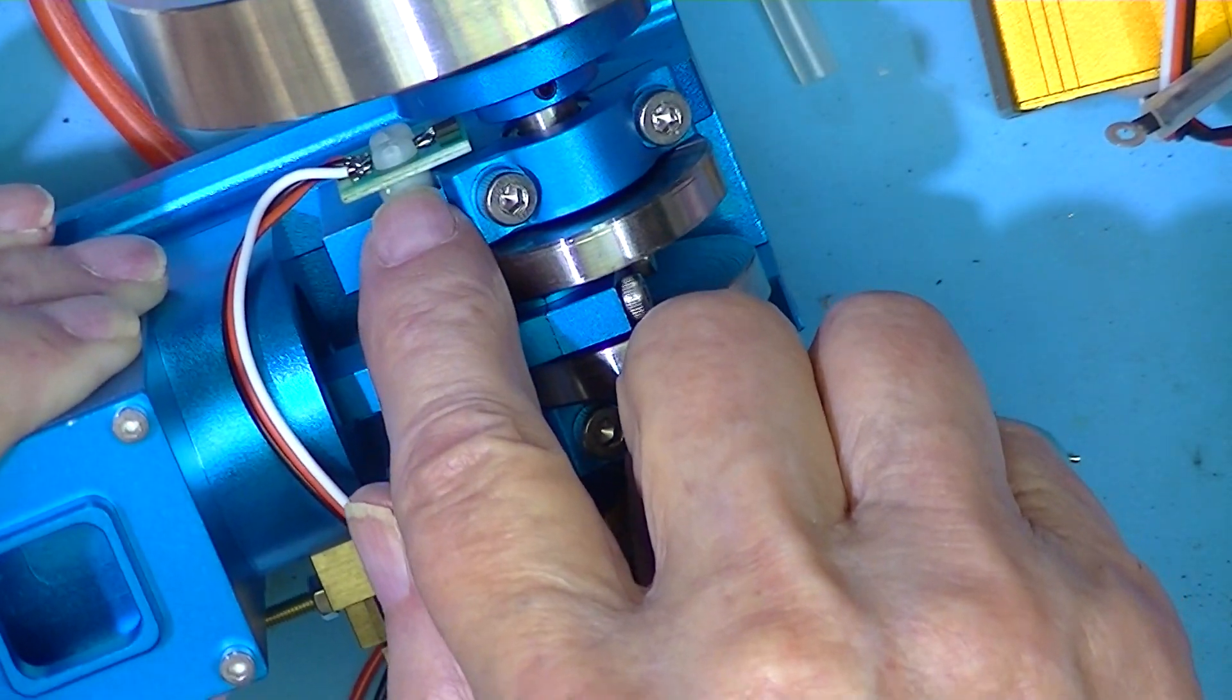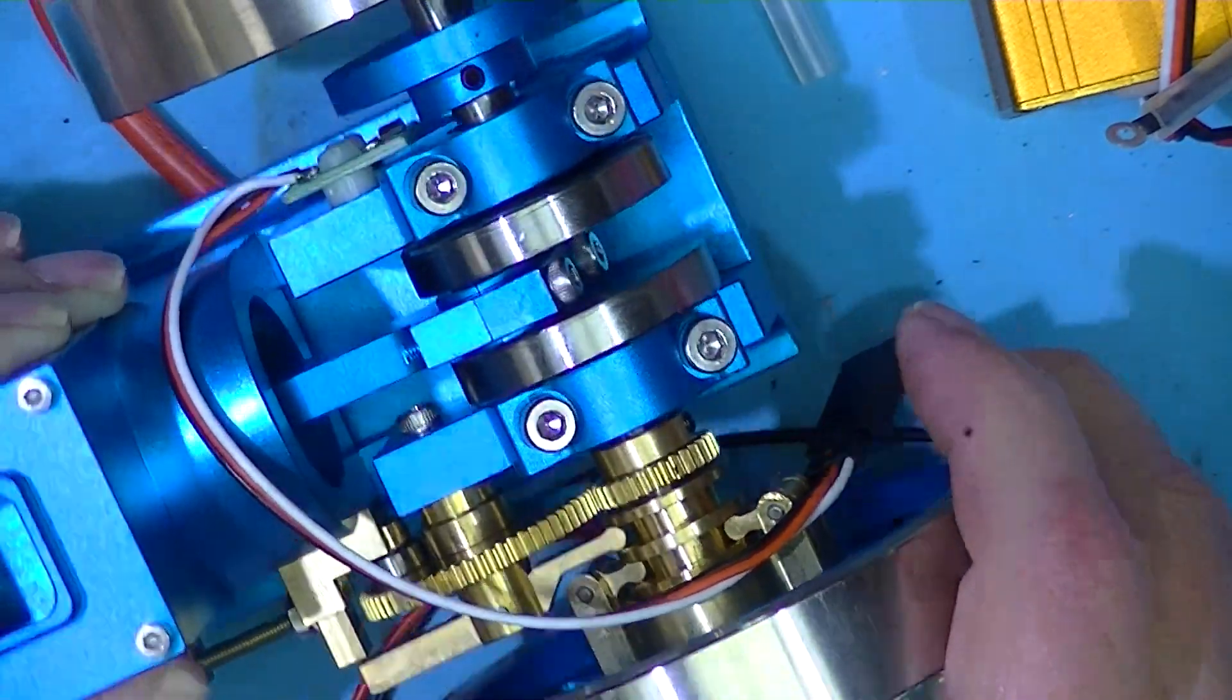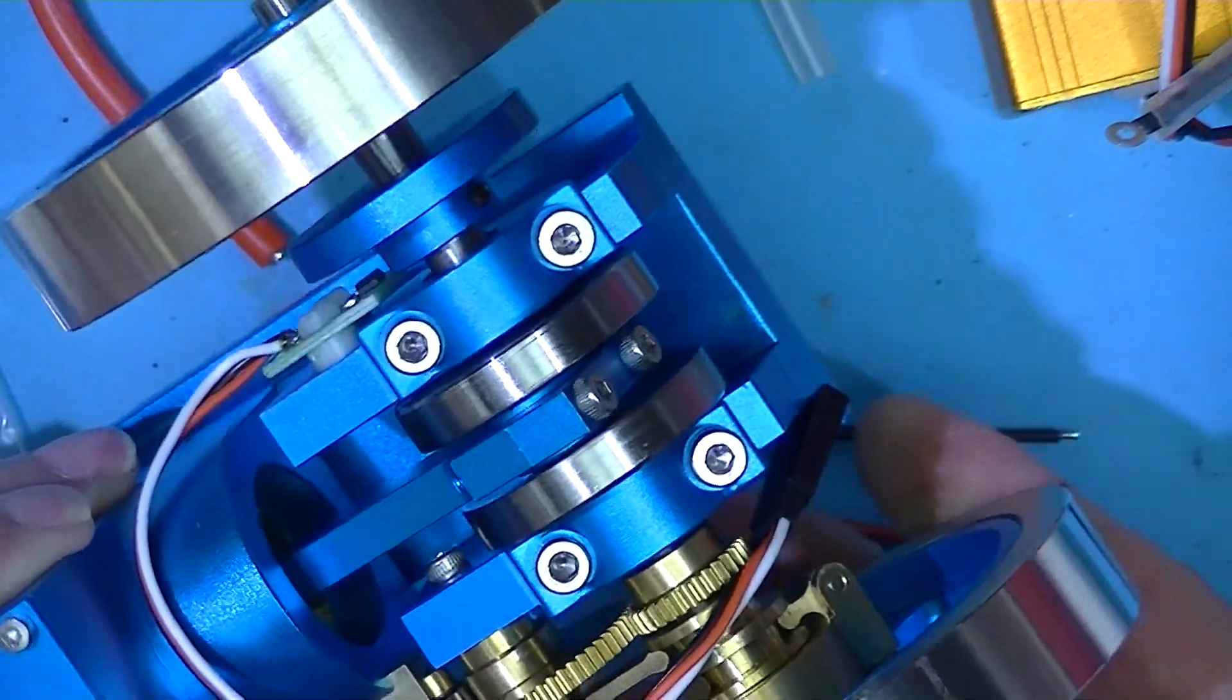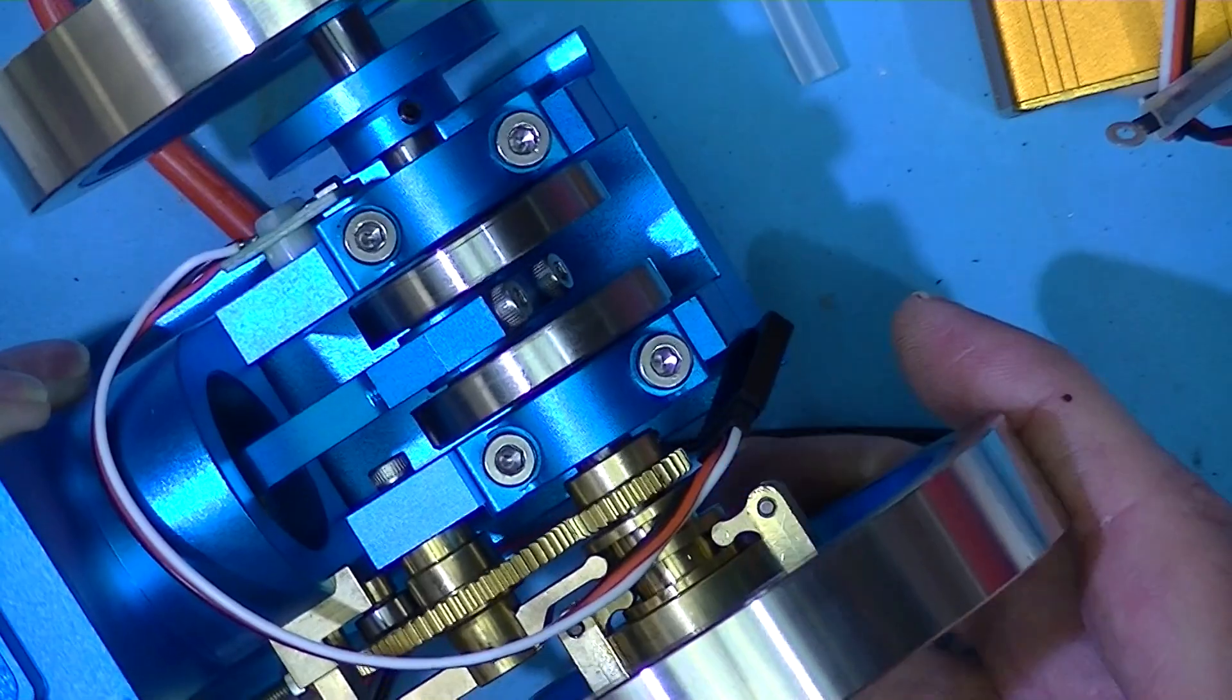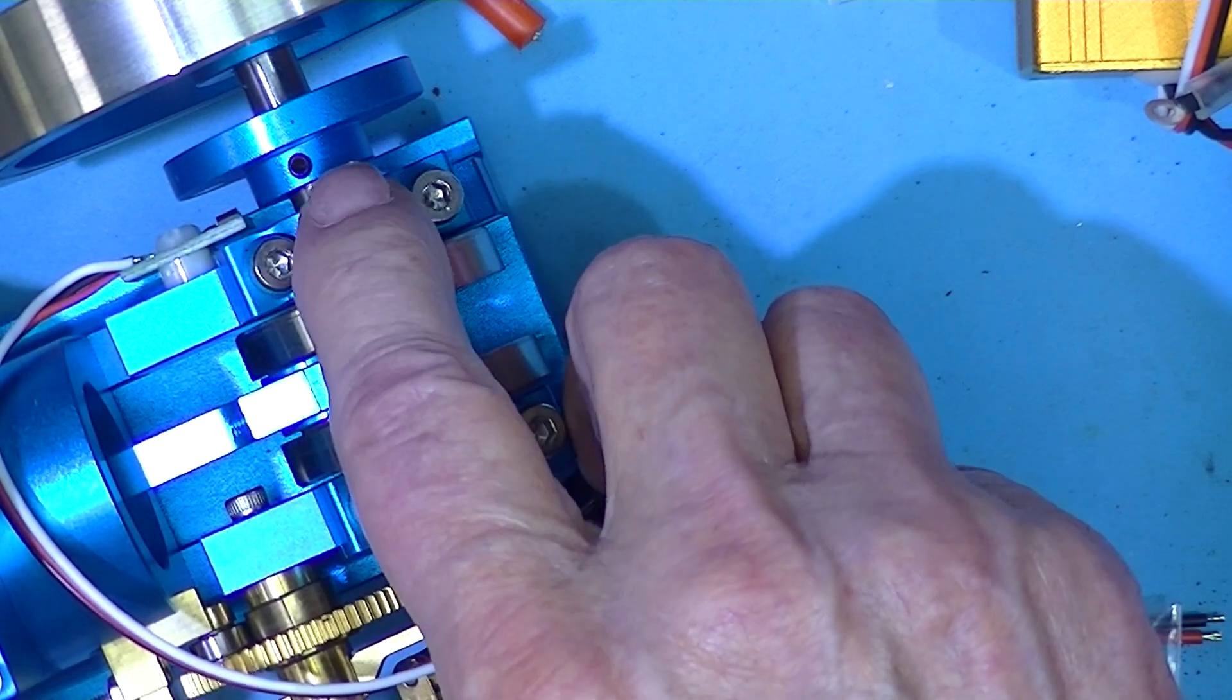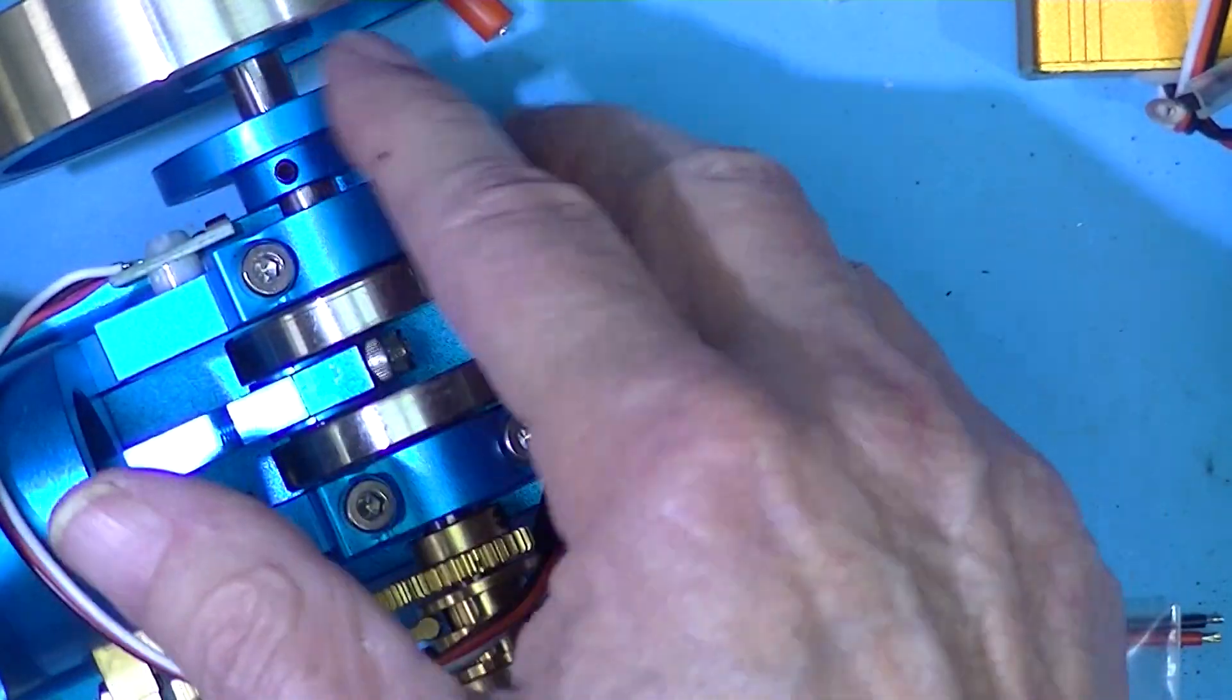Fixed to this disk is probably a magnet of some sort. You can see the magnet goes past the Hall effect switch and causes the device to spark. Timing could be adjusted by loosening this and rotating this machined disk.